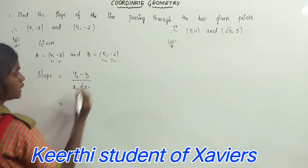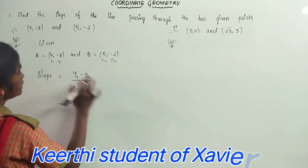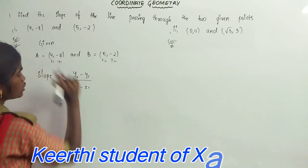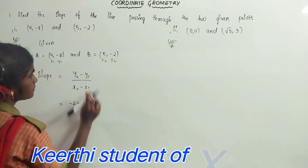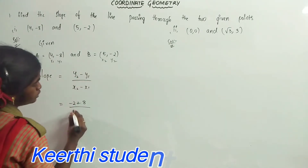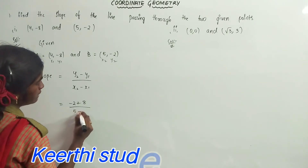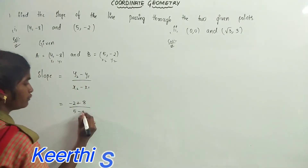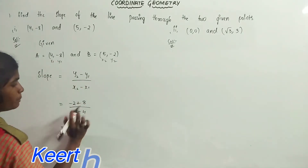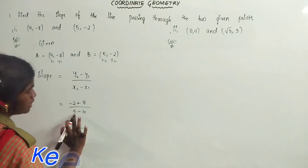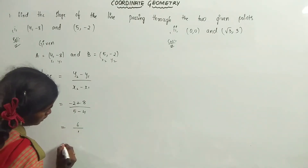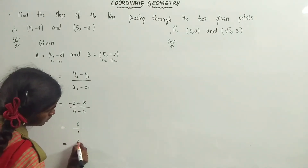y2 is equal to -2, y1 is equal to -8. Minus into minus gives plus 8, by x2 is equal to 5 minus x1 is equal to 4. So we get minus 2 plus 8 equals 6, by 5 minus 4 equals 1, which is nothing but 6.